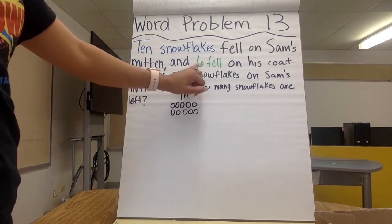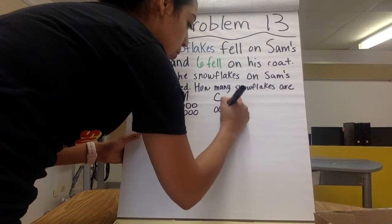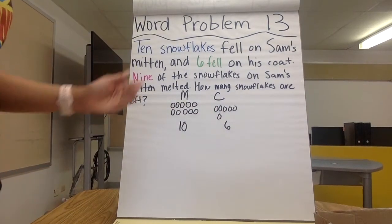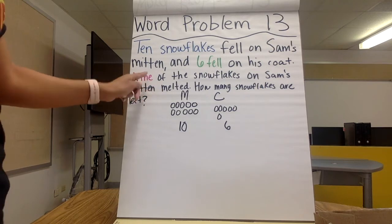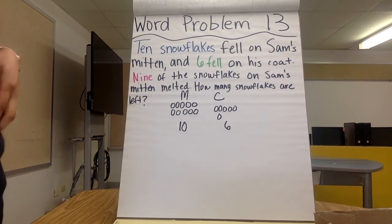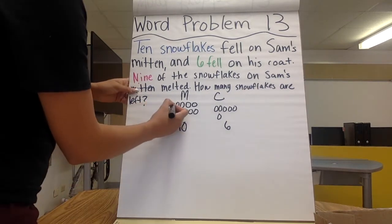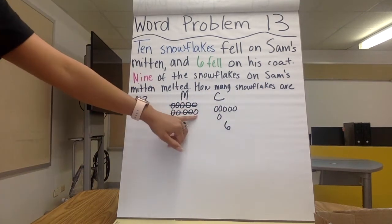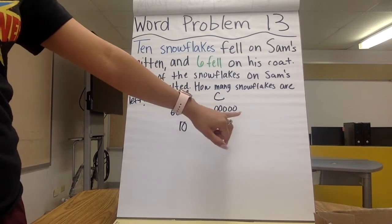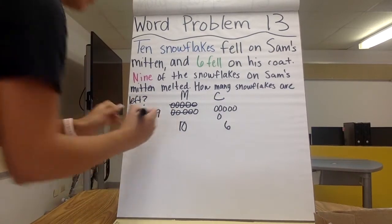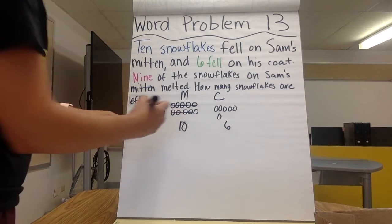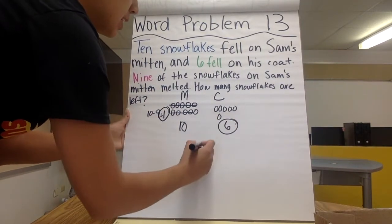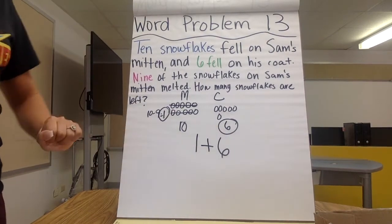Now I'm going to draw six that were on his coat: one, two, three, four, five, six. So don't forget — ten and six. Nine of them melted from the mitten. What I did was ten minus nine. One is left from the mitten, and six is left from the coat. So one plus six is seven.